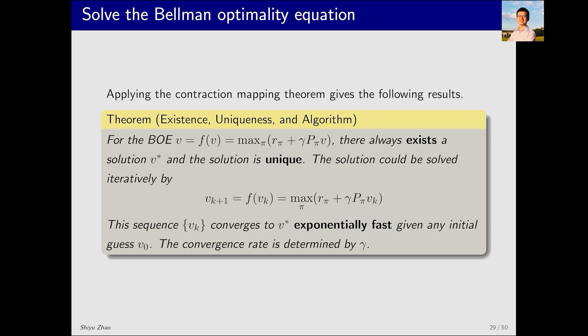After proving that f is a contraction mapping, we can directly apply the contraction mapping theorem to solve the Bellman optimality equation. Several conclusions can be drawn: there always exists a solution, denoted as v star, which is unique. Furthermore, this solution can be iteratively found, with v_k eventually converging to v star.